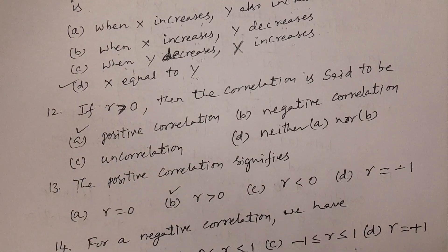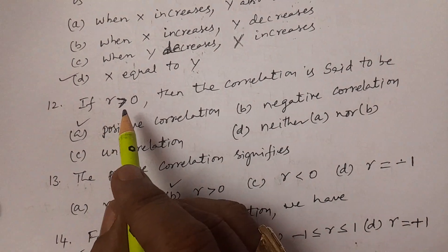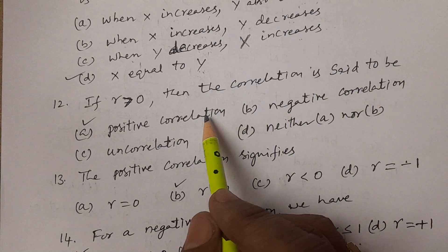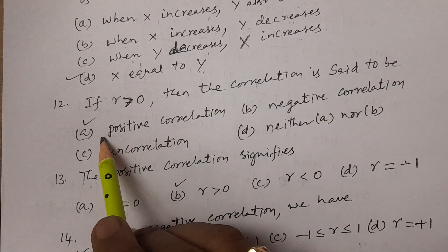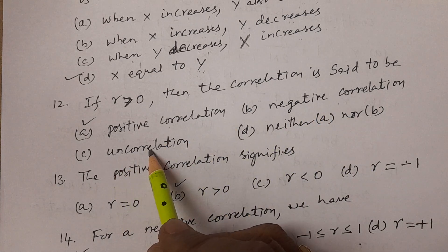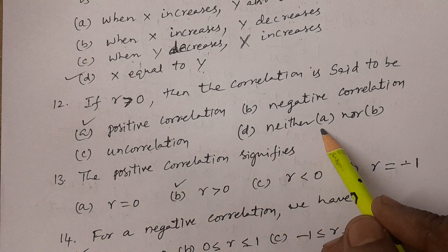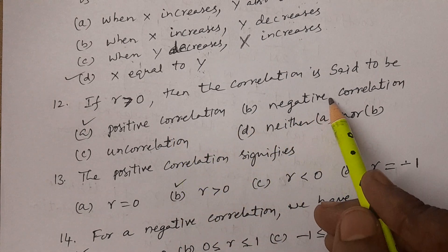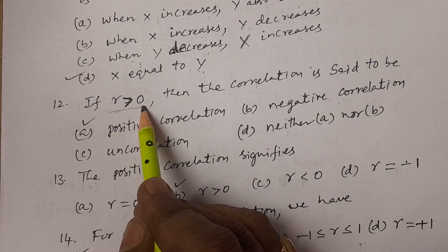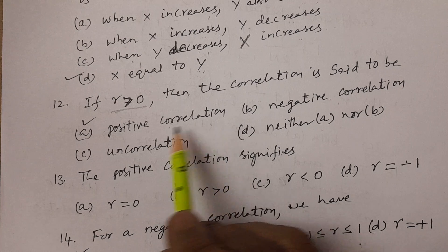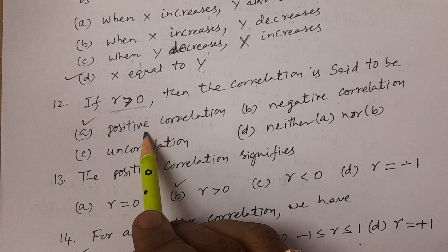Question number twelve: if R is greater than zero, then the correlation is said to be — options are positive correlation, negative correlation, uncorrelation, or neither A nor B. Since R greater than zero means positive, the answer is option A, positive correlation.